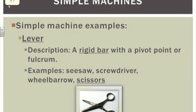Let's look at some examples of simple machines. A lever is a simple machine — it's a rigid bar with a pivot point. Rigid simply means stiff. A pivot point is a point where it can go back and forth. Here on my scissors, I have two bars and the pivot point is right in the middle. Scissors, screwdrivers, and seesaws are all examples of levers, which is a simple machine.